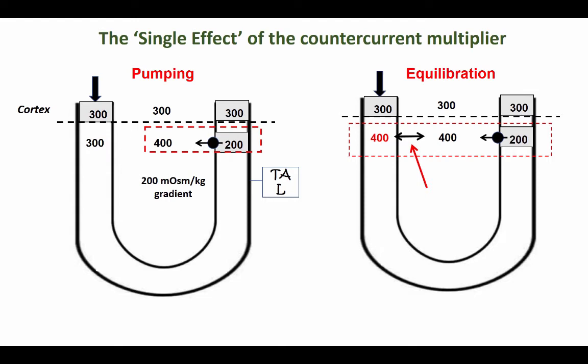That is why the ascending limb is referred to as the diluting limb, and the descending limb is referred to as the concentration limb of the loop. The only problem is that we have not yet multiplied the effect — this only happens at one level.